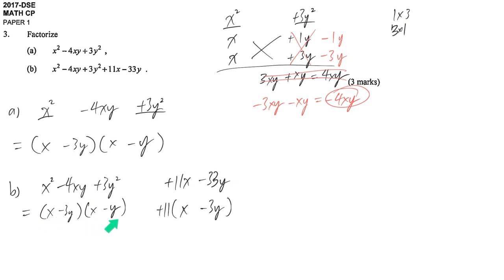Now we have the first term, we have the second term. We are looking for any common factor. That means common parts. We find out that x minus 3y is a common factor for both terms.